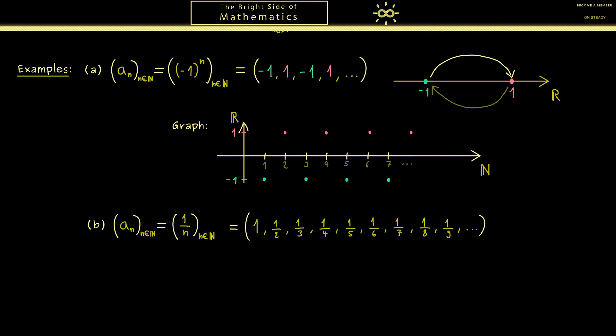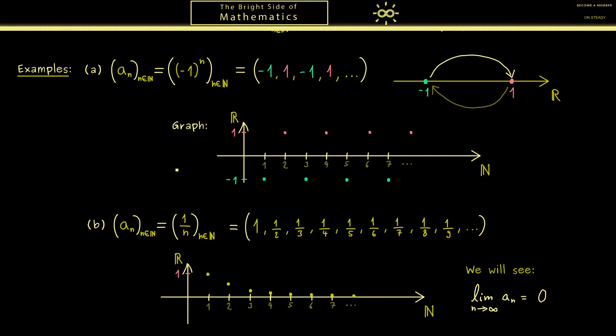Also this sequence we can visualize as a graph. There we just start with the value 1, then the value 1/2, 1/3, 1/4, and so on. Here in fact something happens when we get larger and larger, because you see we get closer and closer to 0. This is what we will define soon as the limit of the sequence. Here we recognize that this sequence has such a nice property, but the sequence from before does not satisfy such a rule.